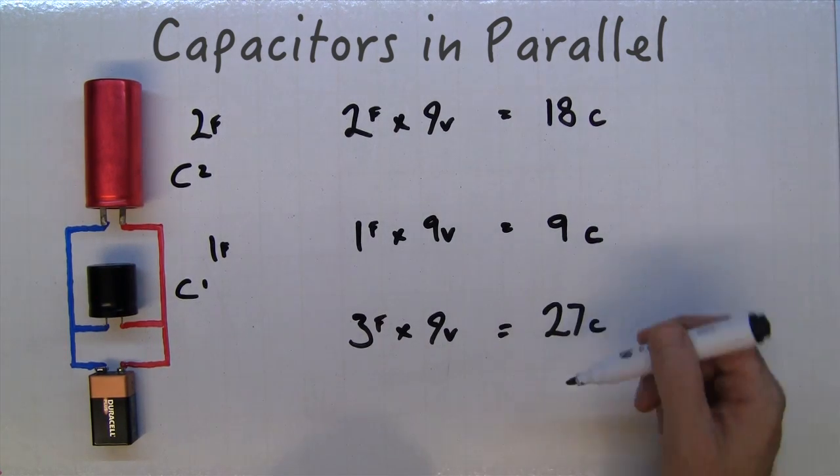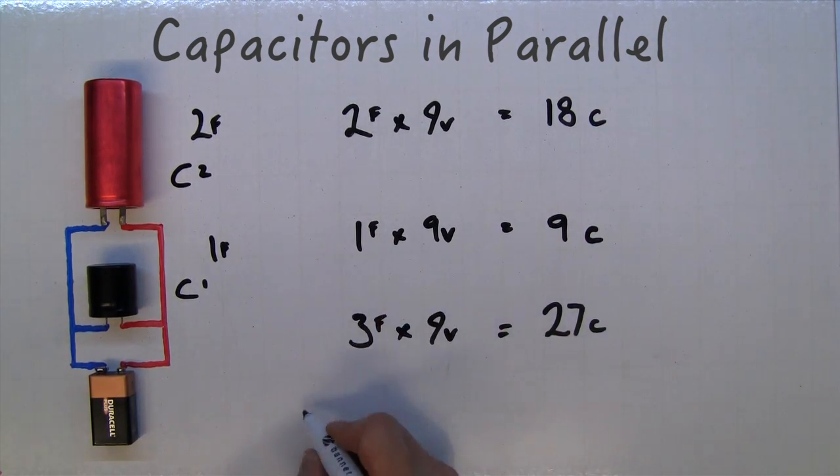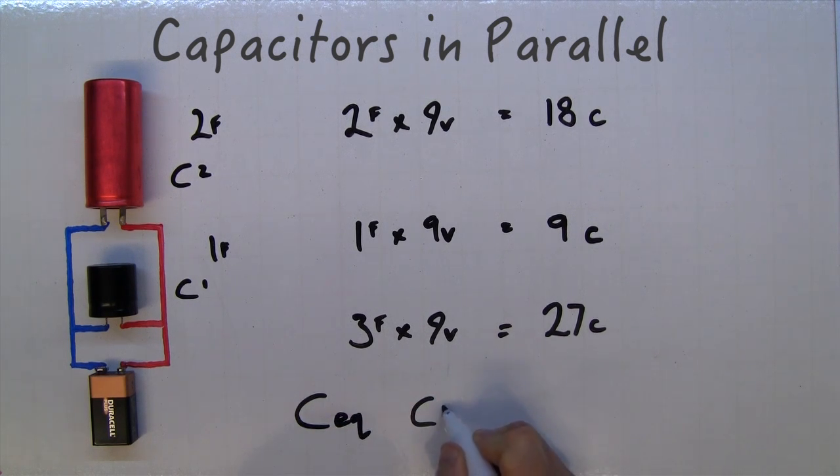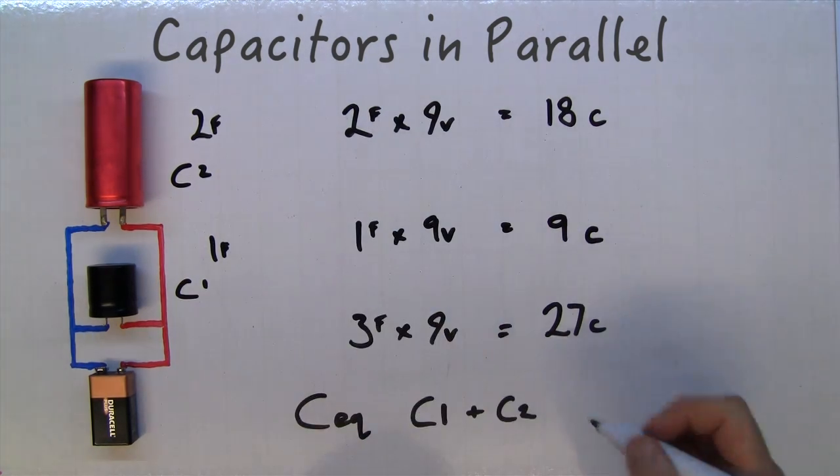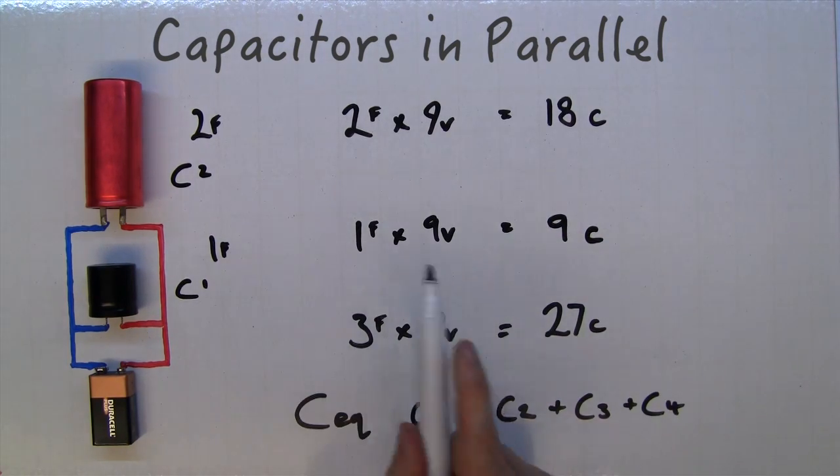You simply have capacitor one plus capacitor two, and you can add more plus capacitor three plus capacitor four. That's the simple way of calculating in parallel.